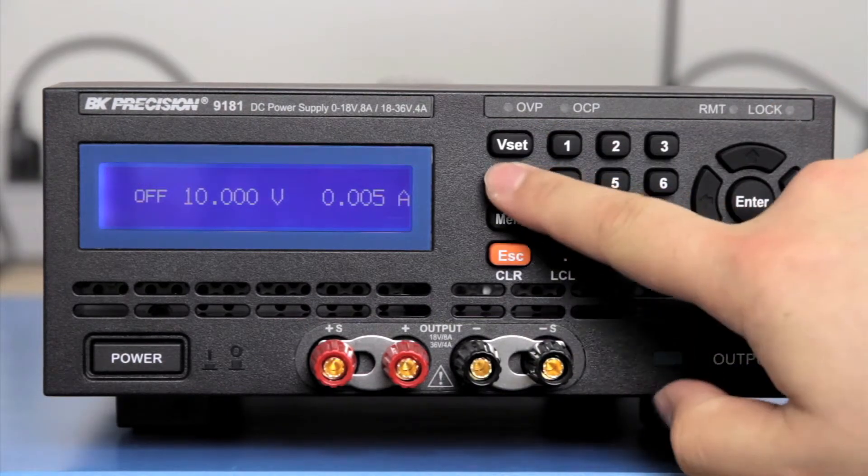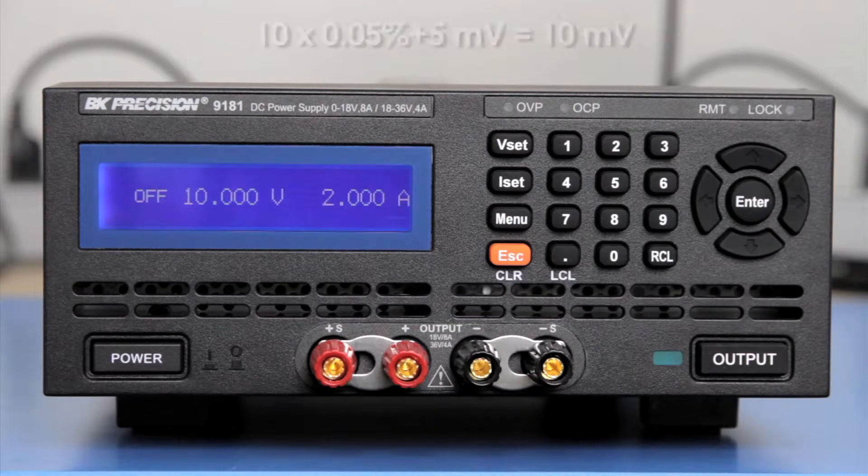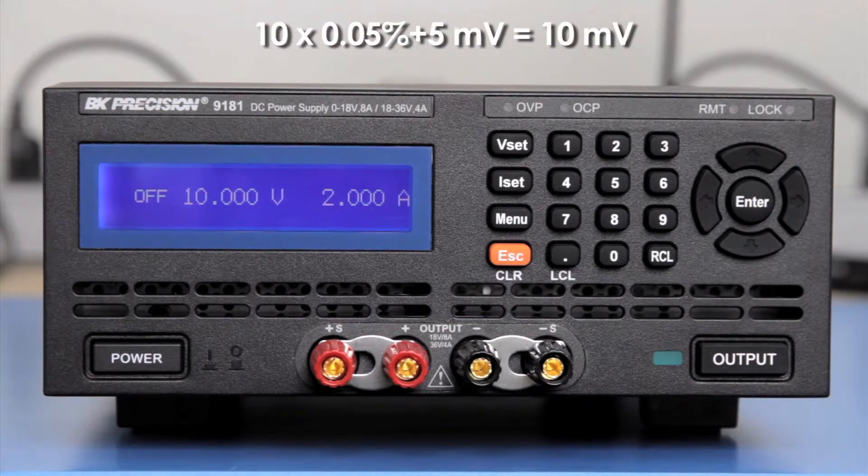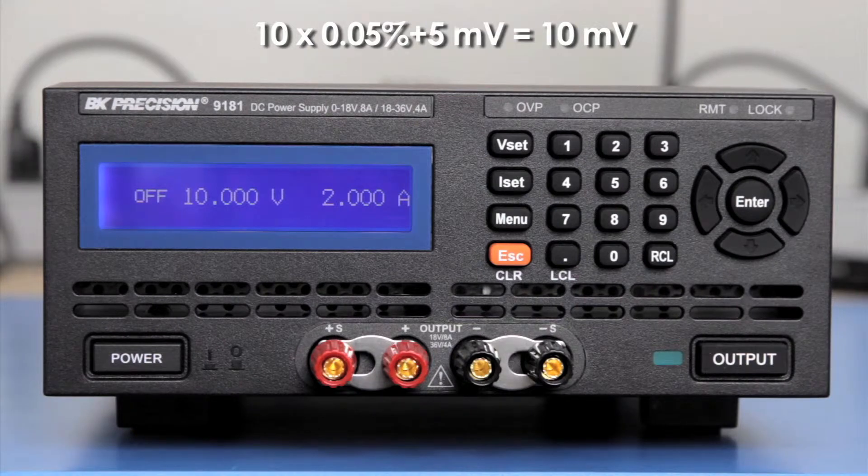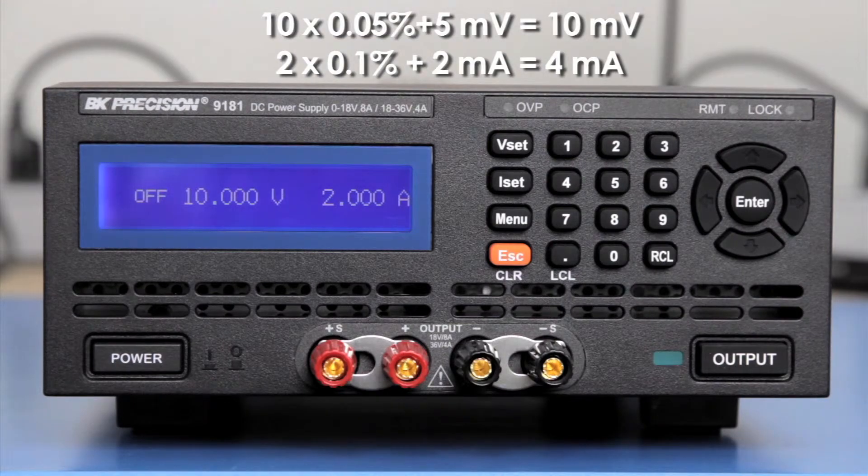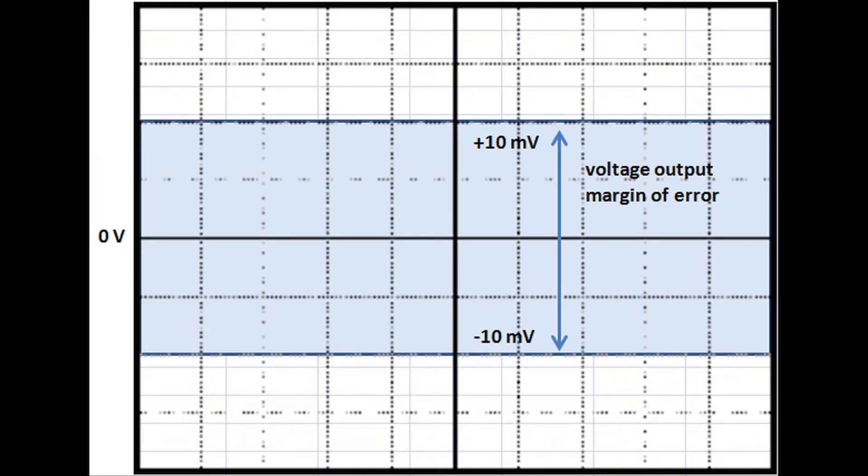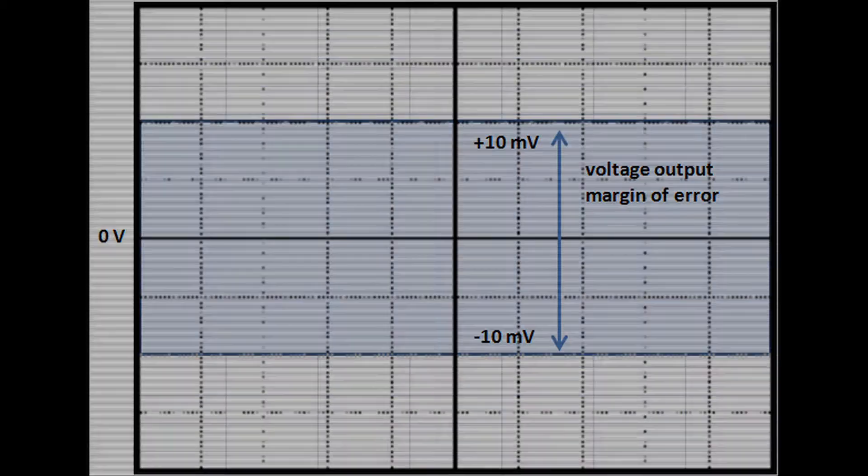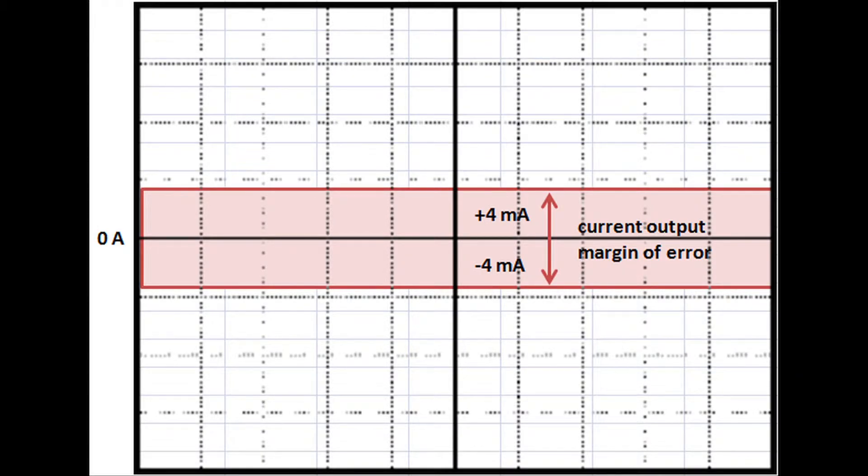...the uncertainty of the output would be 10×0.05% plus 5mV which equals 10mV and 2×0.1% plus 2mA which equals 4mA. This means the voltage can be off by 10mV to the actual voltage value and the current can be off by as much as 4mA to the actual current value.